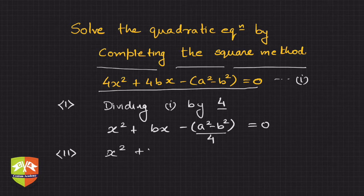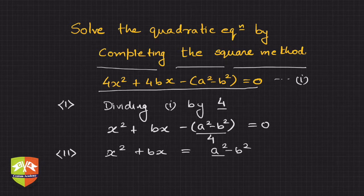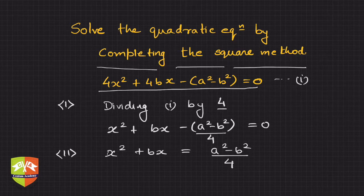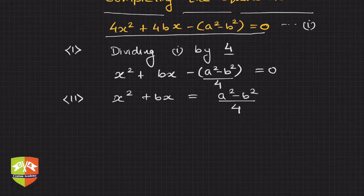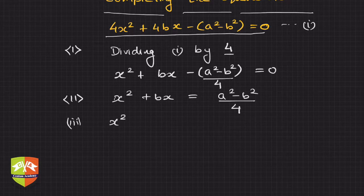The second step is to keep the variable terms on one side and the constant term on the other side. So I will write a² − b²/4 on the right-hand side, moving it across. Now on the left we have x² + bx.